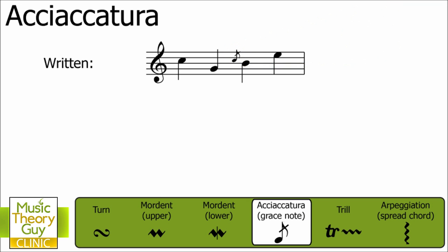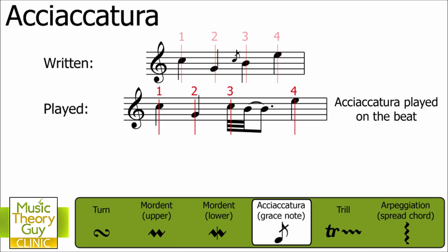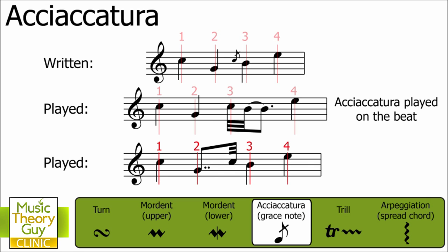So here's our bar again with the acciaccatura in the middle. Here are the beats of the bar: one, two, three, and four. So each of those crotchets are on the beat. Now there are a number of ways that you can play or place the acciaccatura. Here's one way: you could play it so that beat three is exactly where the acciaccatura is. Just be aware that I'm playing a bar of snare drum beats before and during this bar, so you can hear exactly where each of the beats are placed. The acciaccatura is played on the beat, or beat three in this case.